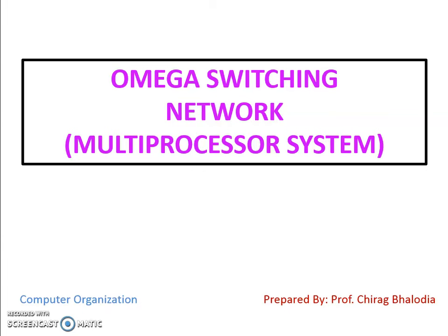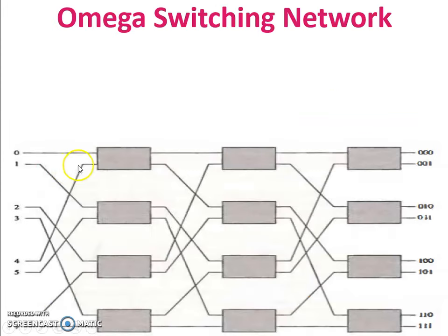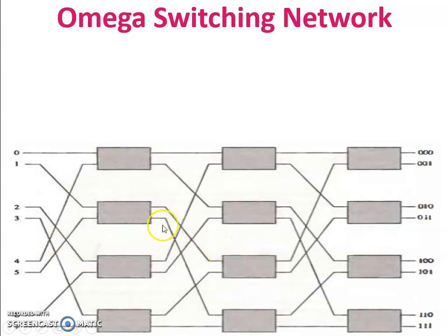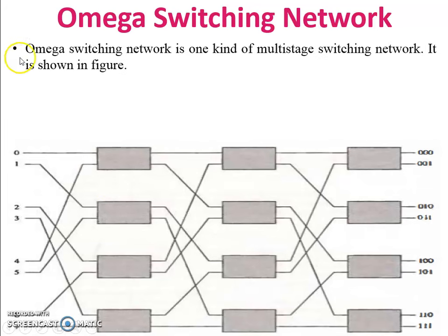Hello friends, myself Chirag. Today I am going to discuss the Omega Switching Network topic of Computer Organization and Architecture. This is the figure of the omega switching network. Today we will discuss how a cell will be reached, how the omega network will be created, what kind of conflicts arise during cell reach at destination, and how they can be solved.